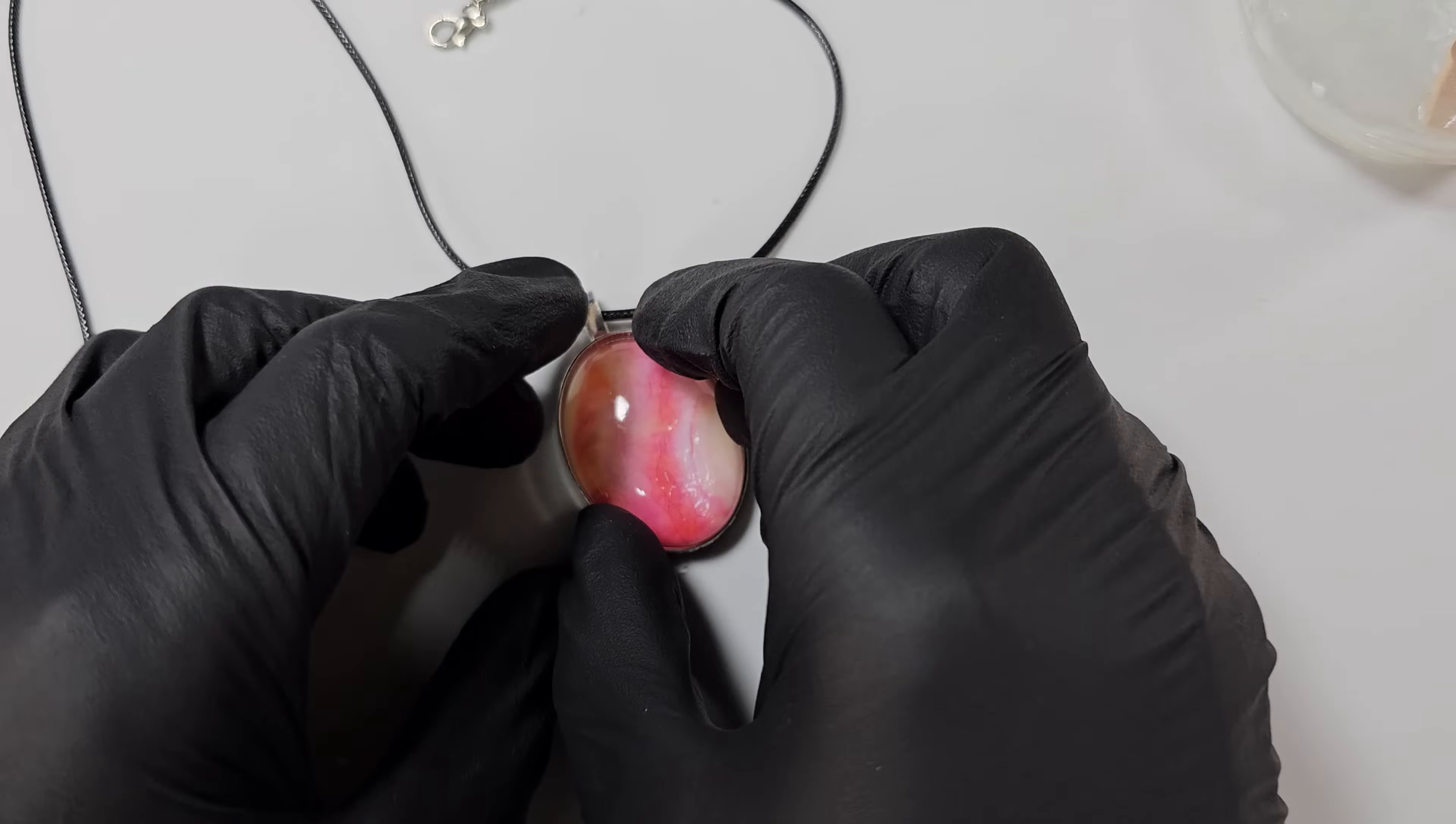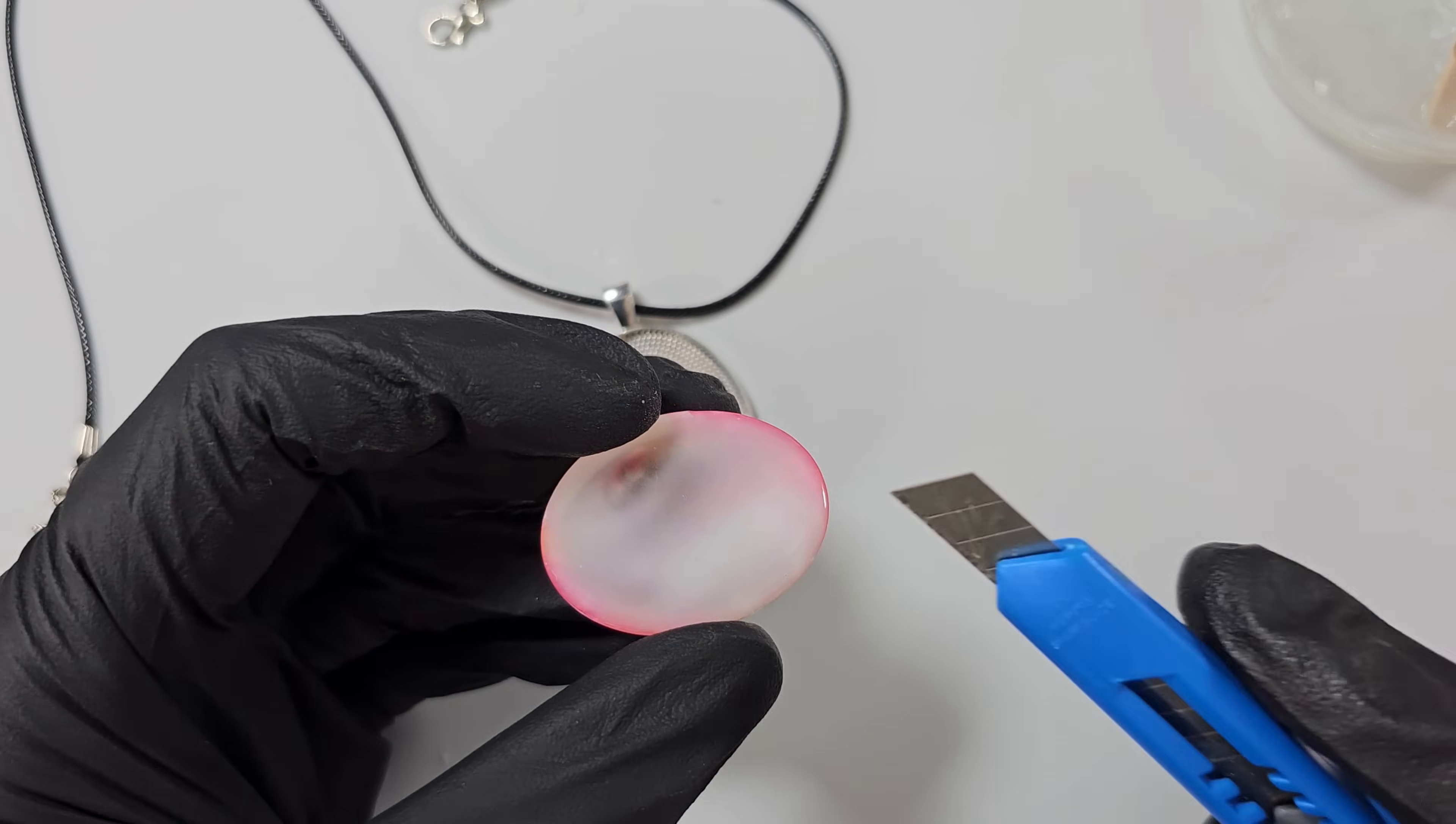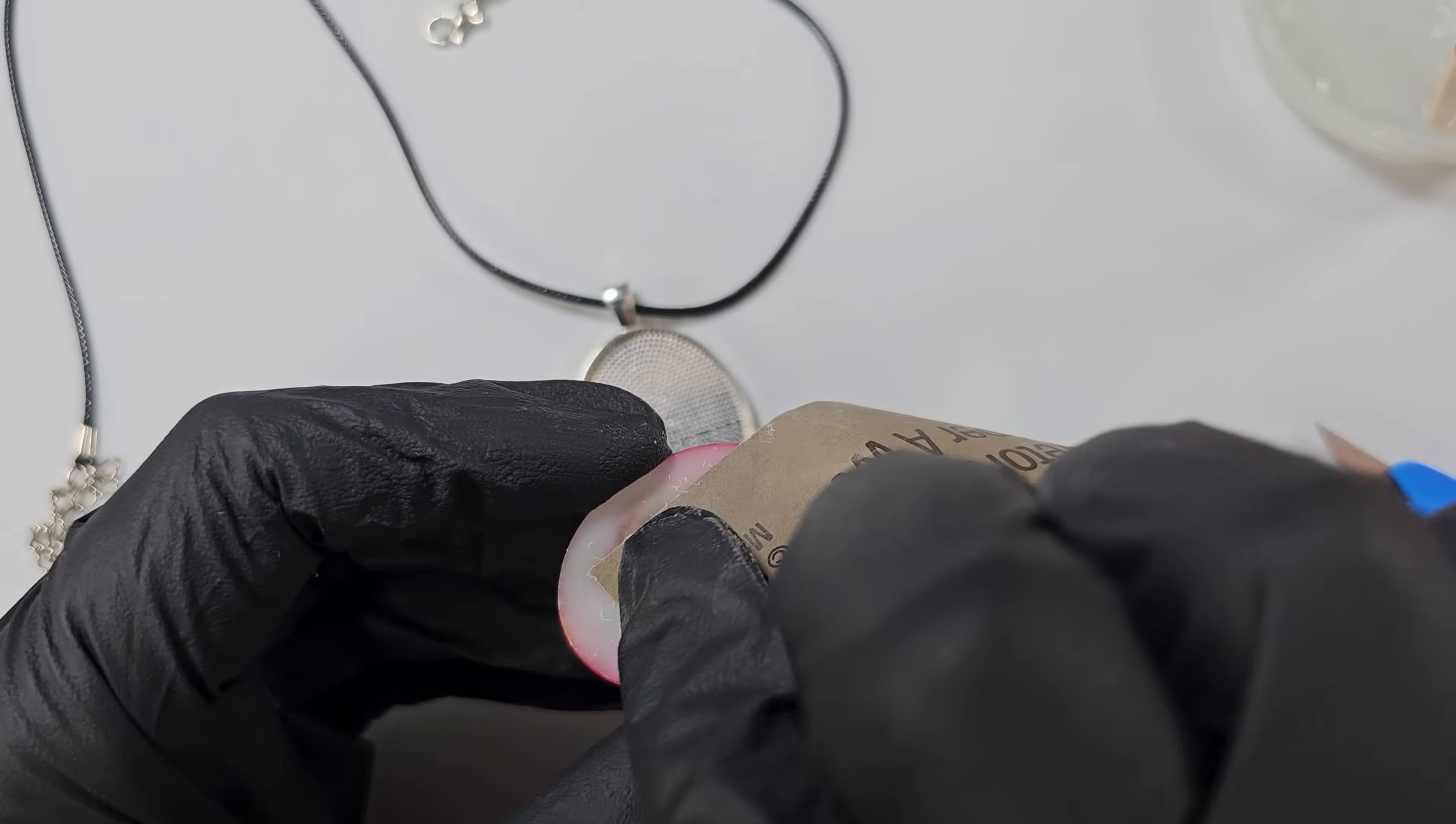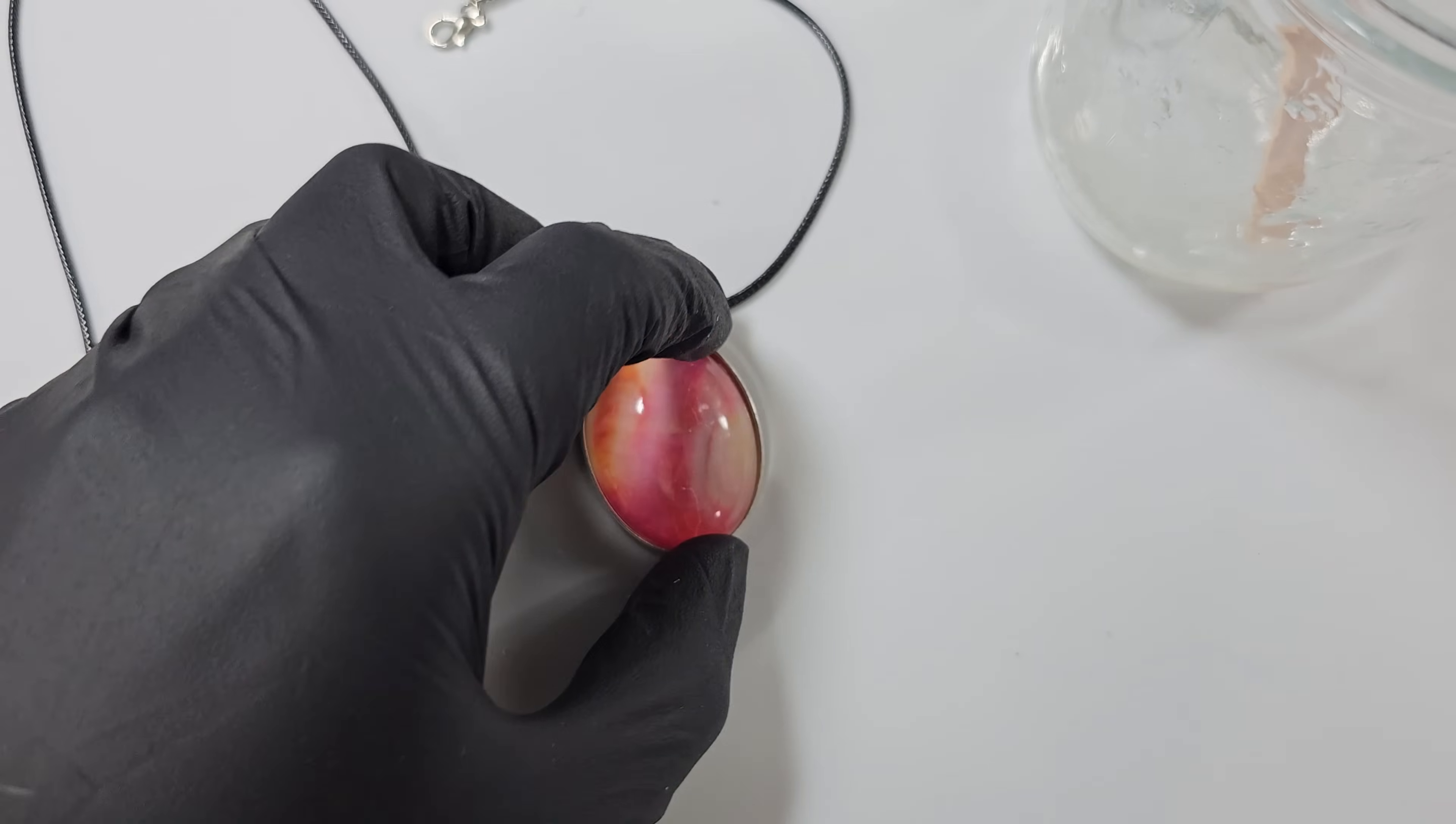Now I'm going to glue this resin cabochon that I made into this bezel. I have done this without scoring and I've done some strength tests and it really doesn't come out but you can score the back of the piece to make a better bond or roughen the back up with some sandpaper. This stuff would be excellent as a wood glue or lots of other crafting glues.